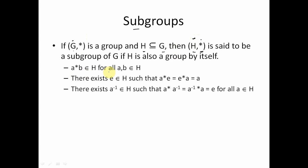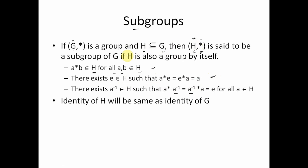Some of the properties: if a and b belong to H then a*b must also belong to H; there exists e belonging to H such that a*e = e*a = a. That means the operation is closed, there is an identity element, and there is an inverse element. These are the three properties which are required for this to be a group, and if H is a subset of G then it is called a subgroup of G.